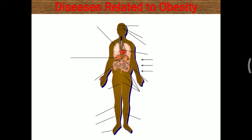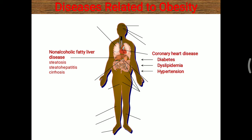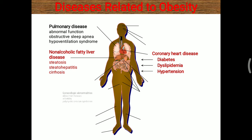Important diseases related to obesity include non-alcoholic fatty liver disease with steatosis, steatohepatitis, and sometimes cirrhosis. Coronary artery disease, diabetes, dyslipidemia, and hypertension are also observed. Pulmonary disease with abnormal function due to compression of the liver over the lung, obstructive sleep apnea, and hypoventilation syndrome are seen. Gynecological abnormalities like abnormal menses, infertility, and polycystic ovarian syndrome occur in females.